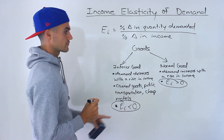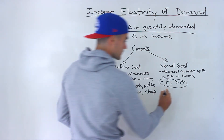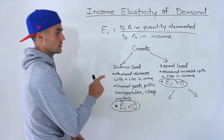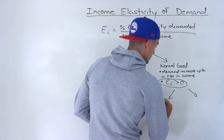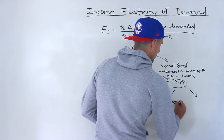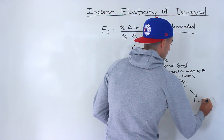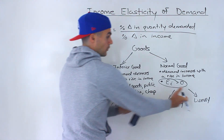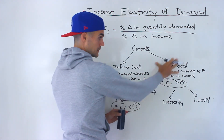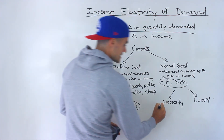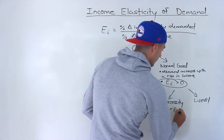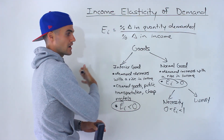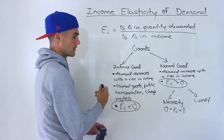Sometimes you'll see subcategories for normal goods. Some textbooks may have this, some may not. Normal goods are sometimes split into necessities and luxuries. For both, the coefficient is going to be positive. But for a necessity, the coefficient is going to be between zero and one — that demand is going to increase, but not by a large amount.